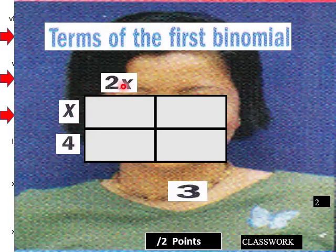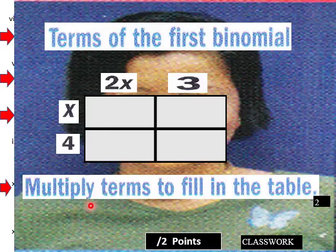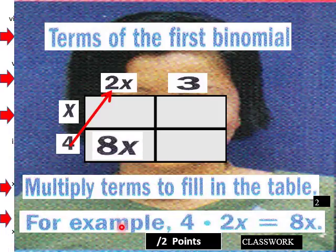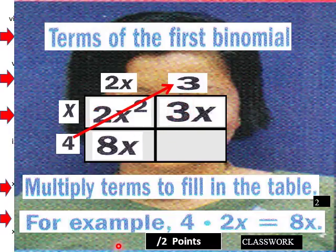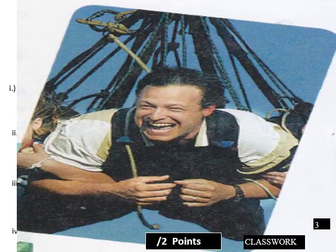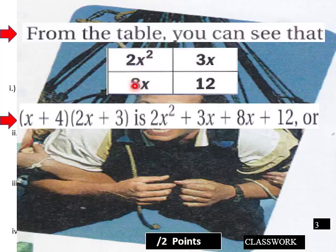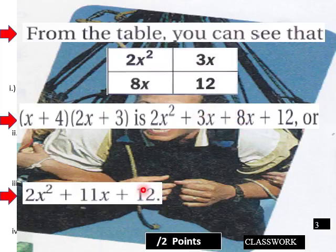So we have X plus 4 and 2X plus 3. Multiply terms to fill in the table. For example, 4 times 2X would be 8X. And then X times 2X would be 2X squared. Then X times 3 would be 3X. And then 4 times 3 would equal 12 — there's our constant. Then we need to combine like terms: we combine 3X and 8X and get 2X squared plus 11X plus 12. That would be the product of multiplying these two binomials.